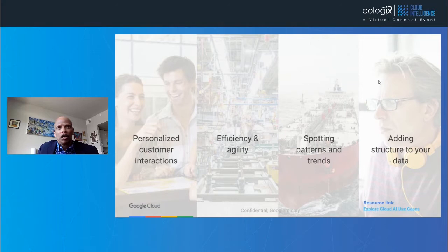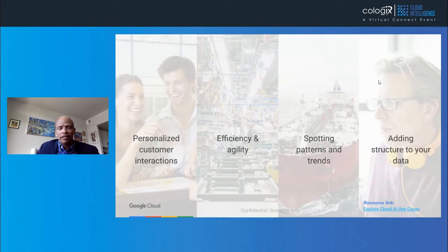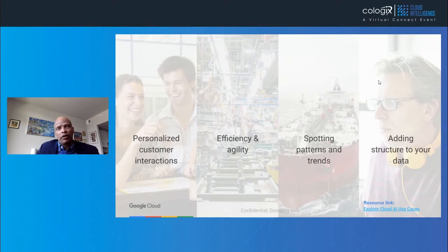Rolls-Royce is working with Google Cloud to build an object classification system for detecting, identifying, and tracking objects a ship can encounter at sea. This is essential as autonomous ships become commonplace. Rolls-Royce will create machine learning models that can interpret large and diverse marine data sets. Accessing this through the cloud, the model can be developed from anywhere and immediately be accessible.